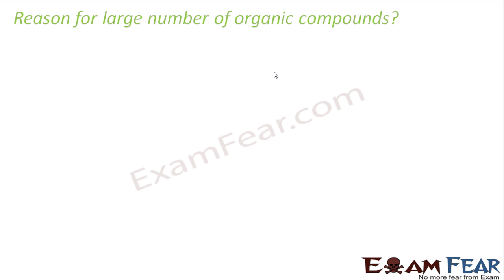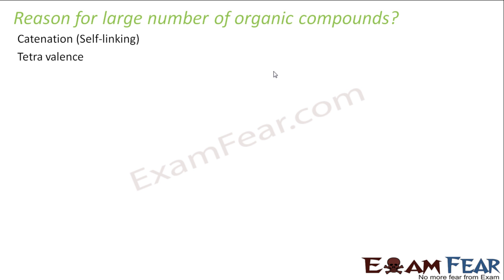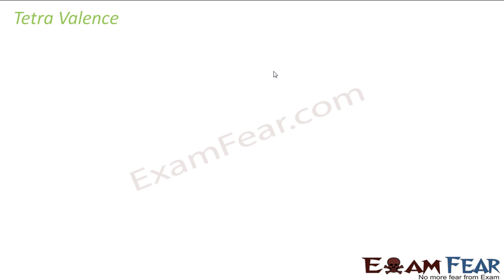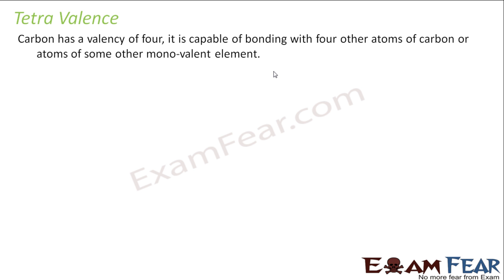We have already covered this, but let us revisit it. What are the reasons for the large number of organic compounds? There are two reasons: one is catenation, that is self-linking, and the other is tetravalency. Let us study tetravalency.